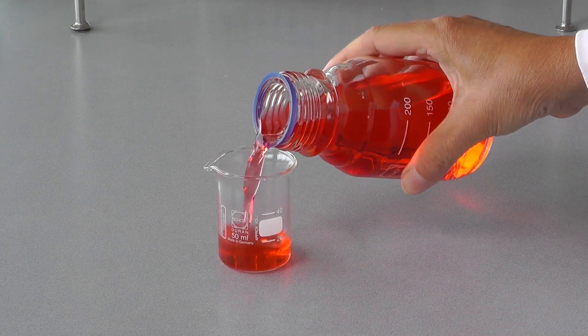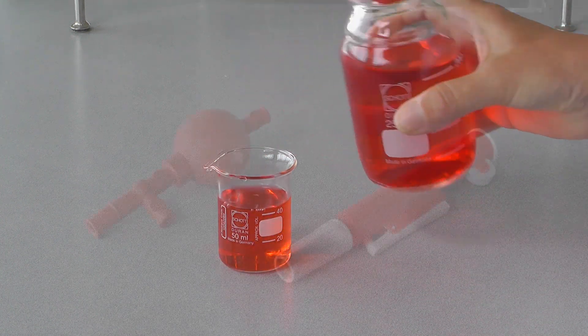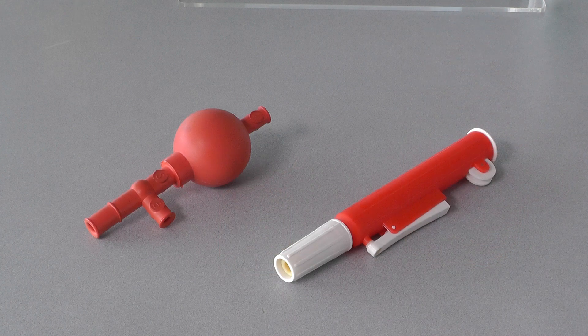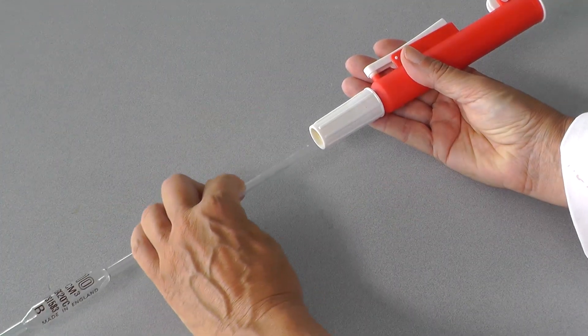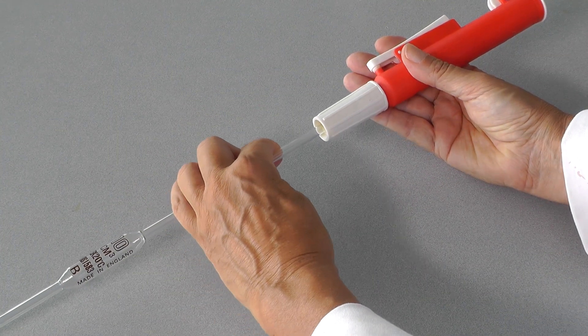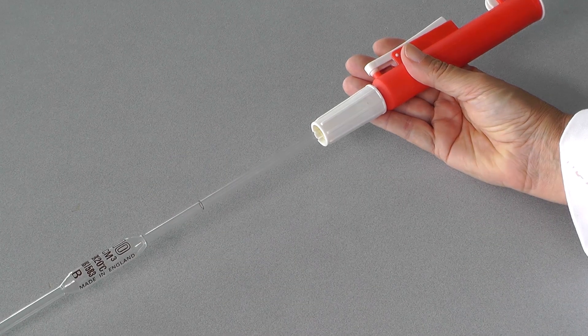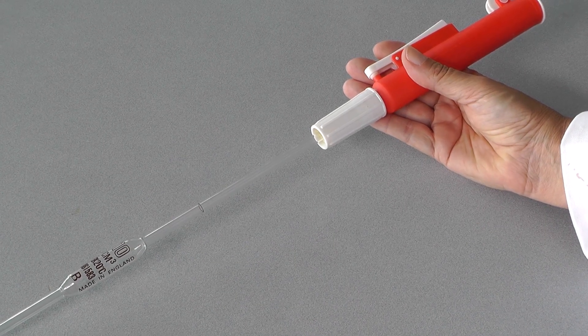There are different devices used to fill pipettes. You could use a rubber bulb, but most likely you will use a pipette filler as shown in this video. Insert the pipette into the filler, holding the pipette near the top to avoid breaking or damaging it. It needs to fit tightly enough that the pipette doesn't need to be held.